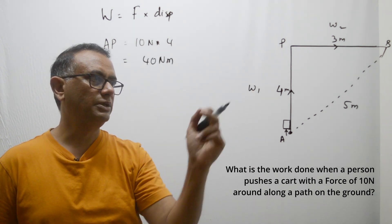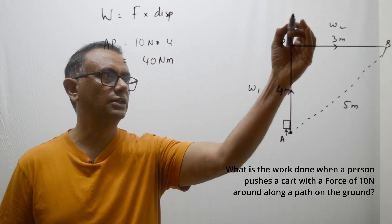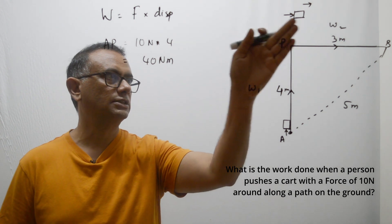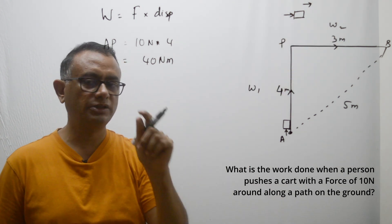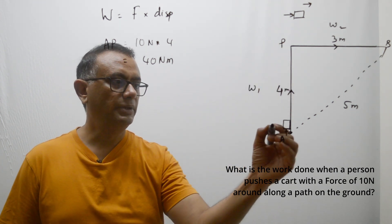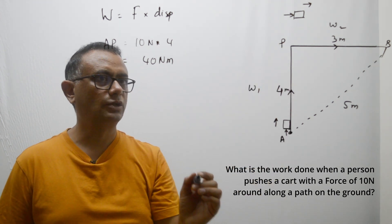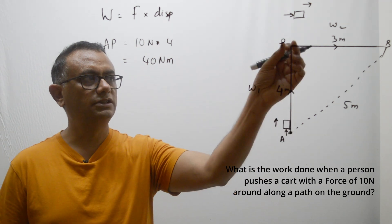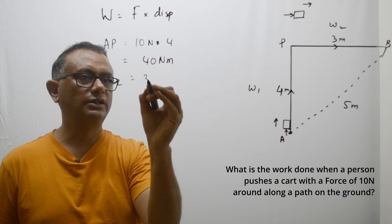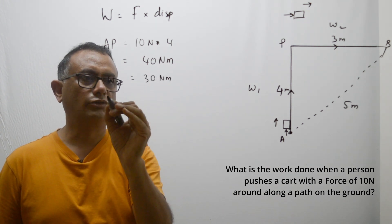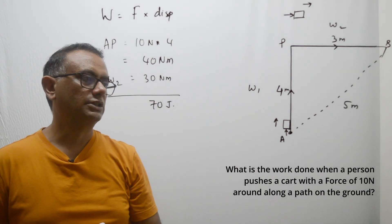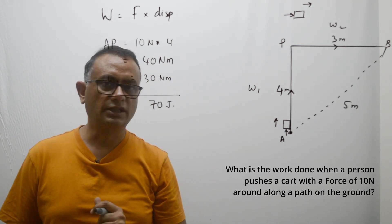For the PB journey, the force is applied in this direction and the displacement is also in this direction, so force and displacement have angle zero. Similarly in the AP leg, force and displacement are parallel with angle zero. Work done W2 is 3 times 10, which is 30 joules. Therefore the total work is 70 joules. That's how we compute work done in these cases.